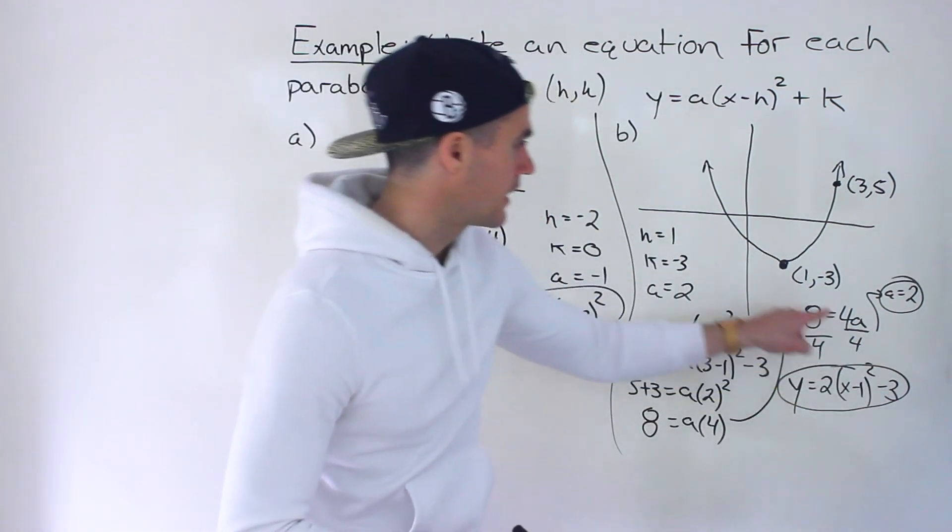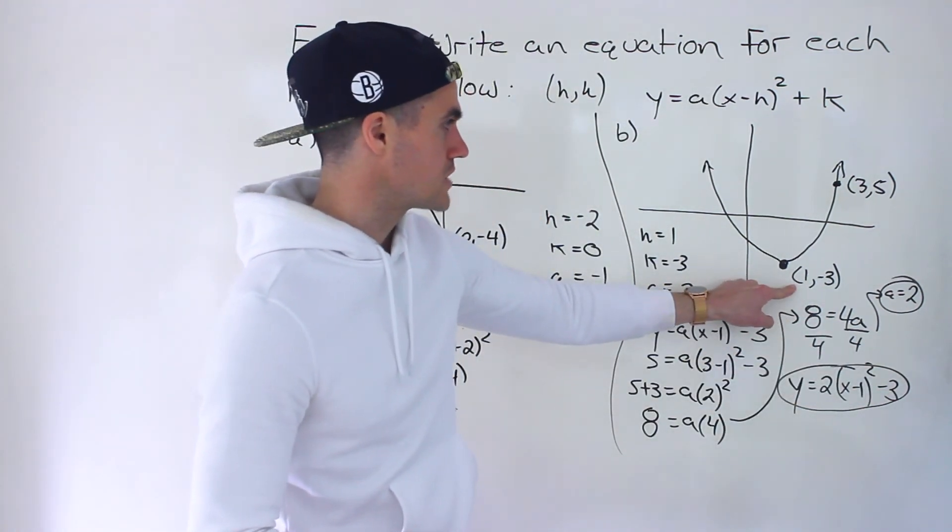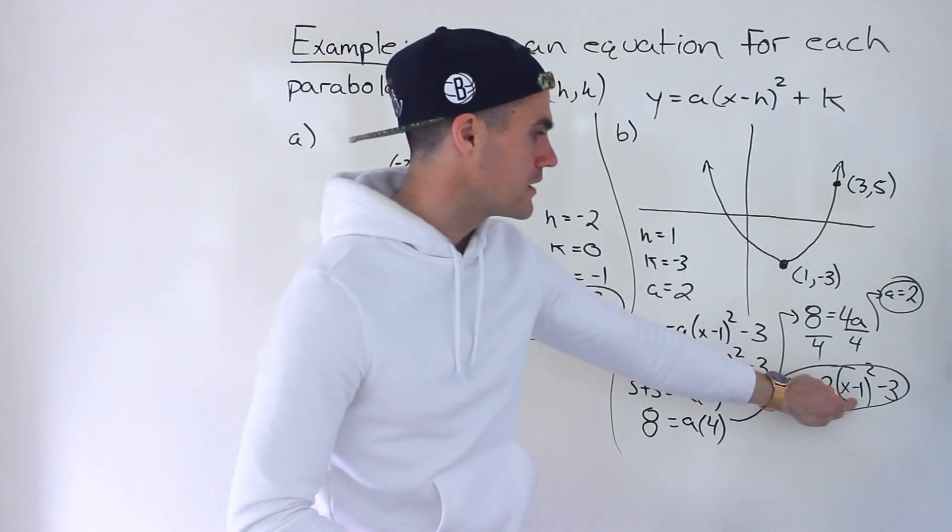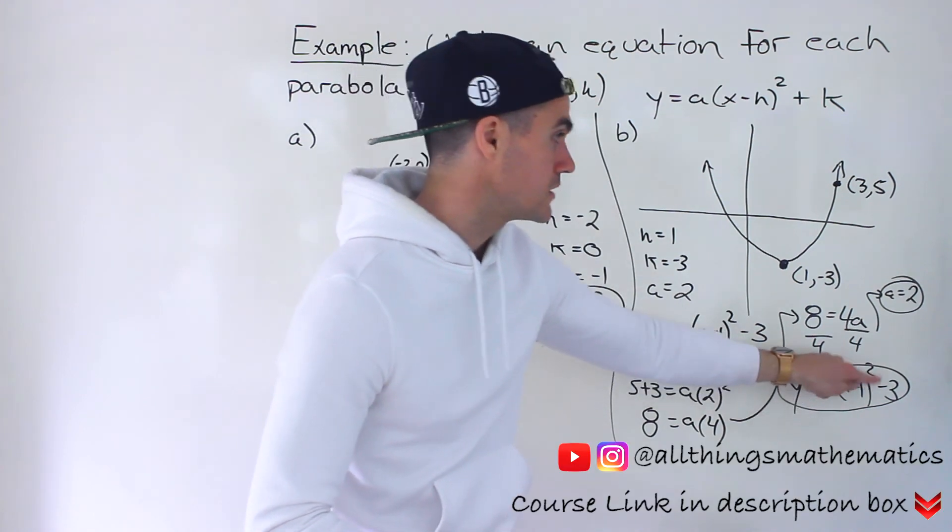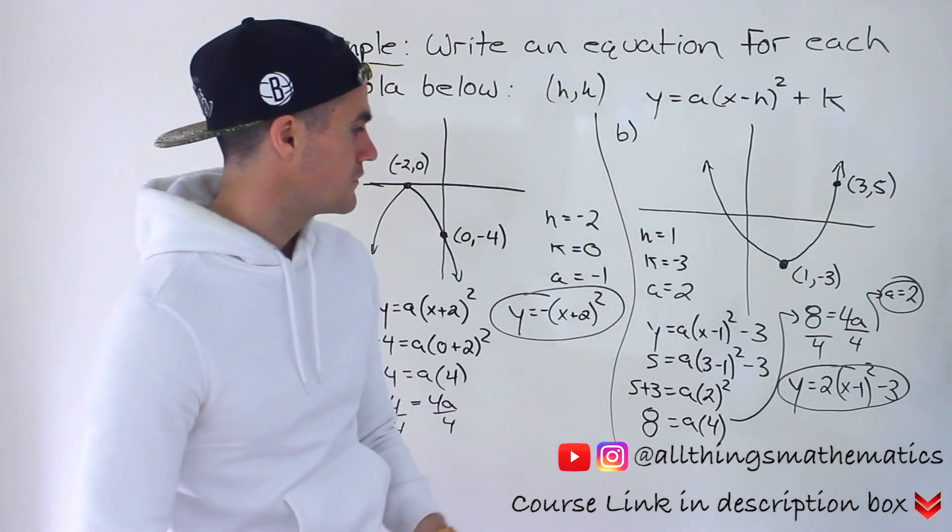And just a quick check. One negative three from the vertex form. That's the vertex. Let's plug in three. Three minus one. Two to the power of two. Four times two gives us eight. Eight minus three does indeed give us five.